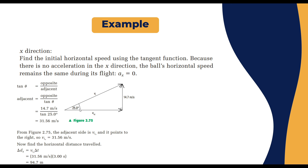Using tan(θ) = opposite / adjacent = v_iy / v_ix, we get v_ix = v_iy / tan(25°) = 14.7 / tan(25°) = 31.56 m/s. Since v_ix = Δdx / Δt, the range is Δdx = v_ix × Δt = 31.56 × 3 = 94.7 meters. That answers the problem.